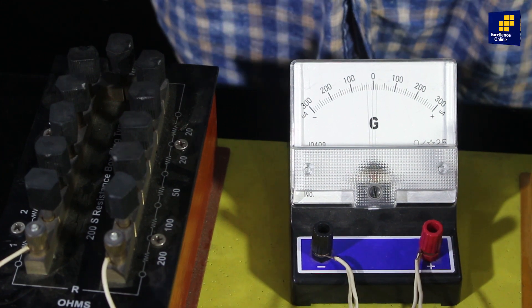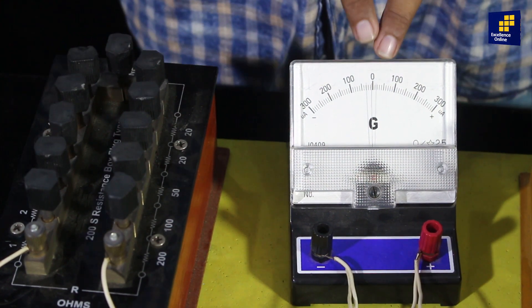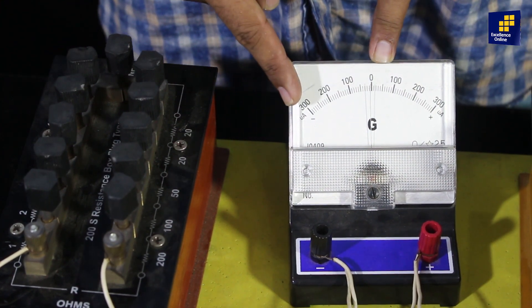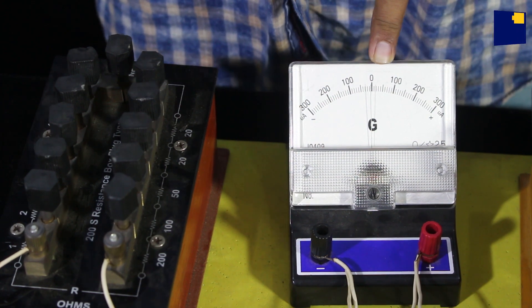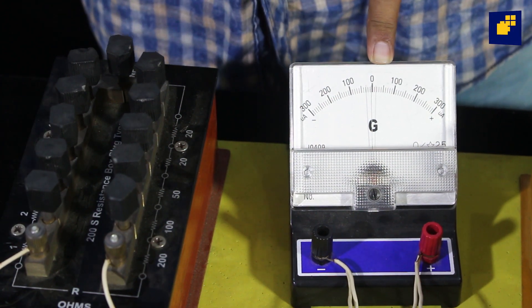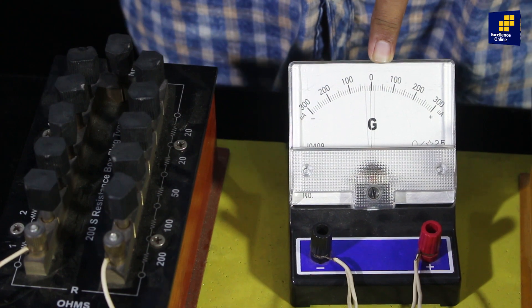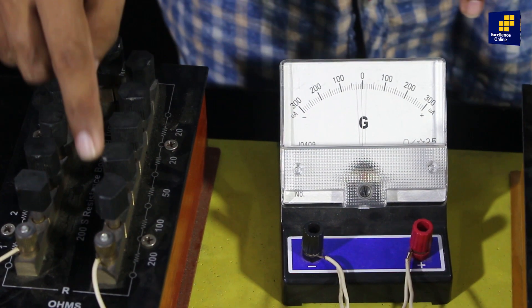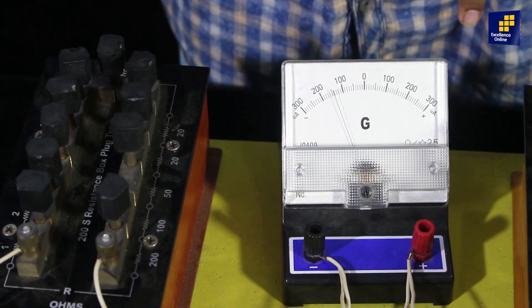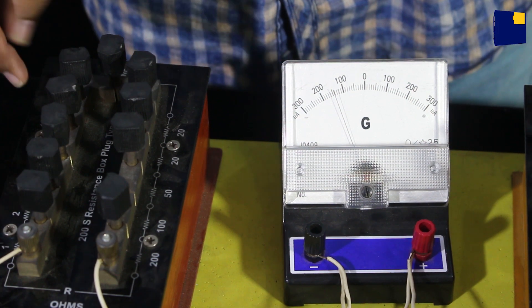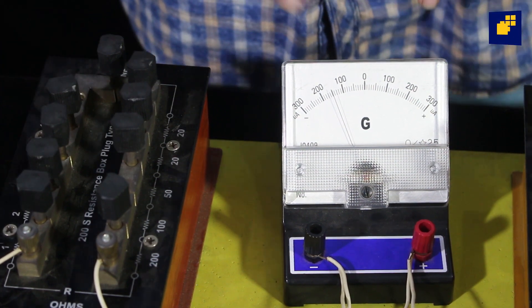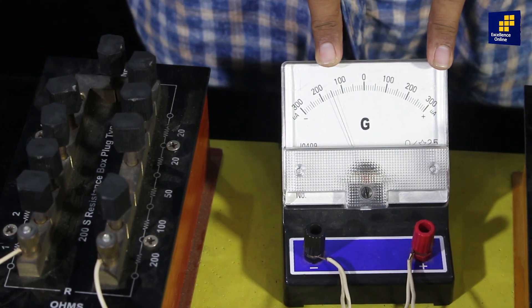अब हम यहाँ से resistance इतनी remove करेंगे, कि यह galvanometer का deflection जो कि 30 degree पर था, अब यह 15 degree या half हो जाए. Deflection half हो जाए. इसी लिए इस method को हम कहते हैं half deflection method. Let's say I remove 100 ohm here, and further 10 ohms. You can see the pointer comes to 15 degree.